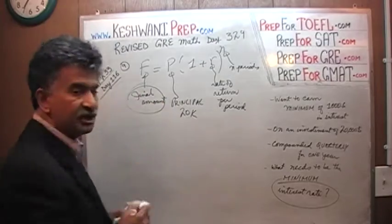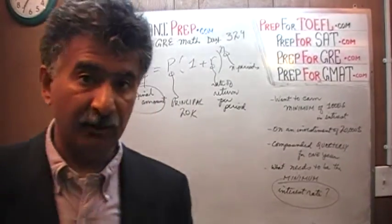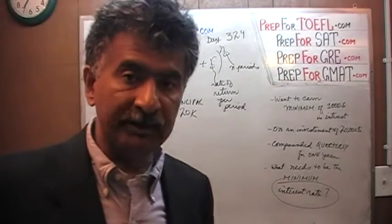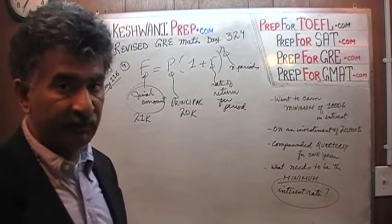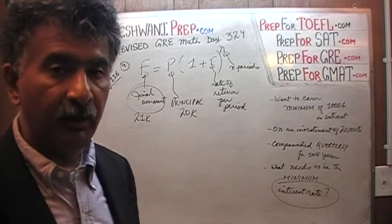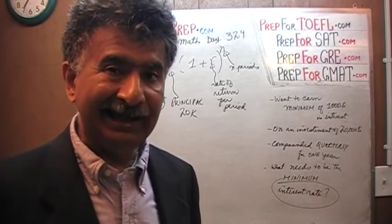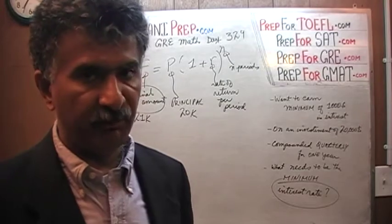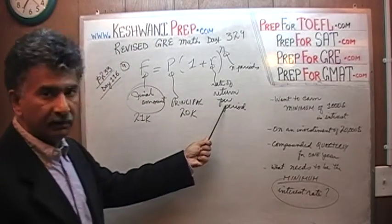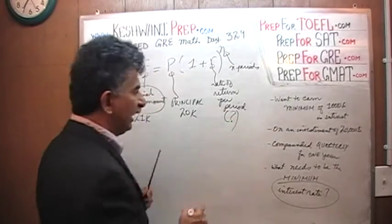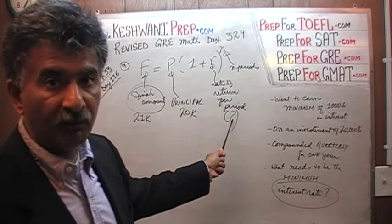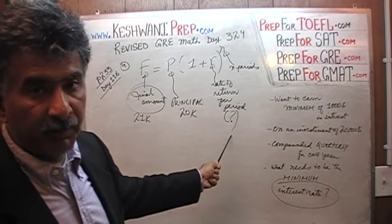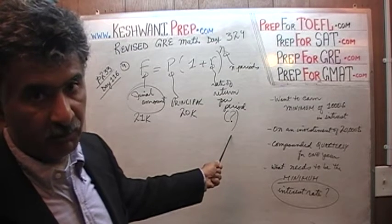The final amount that we want to achieve is at least $21,000, because we started with $20,000 and want to earn a minimum of $1,000 in interest. The rate of return per period is exactly what we are trying to find here. Our period here is a quarter. Once we find the rate of return per period, we simply multiply it by 4 — because there are 4 quarters in a year — and we will get our answer.